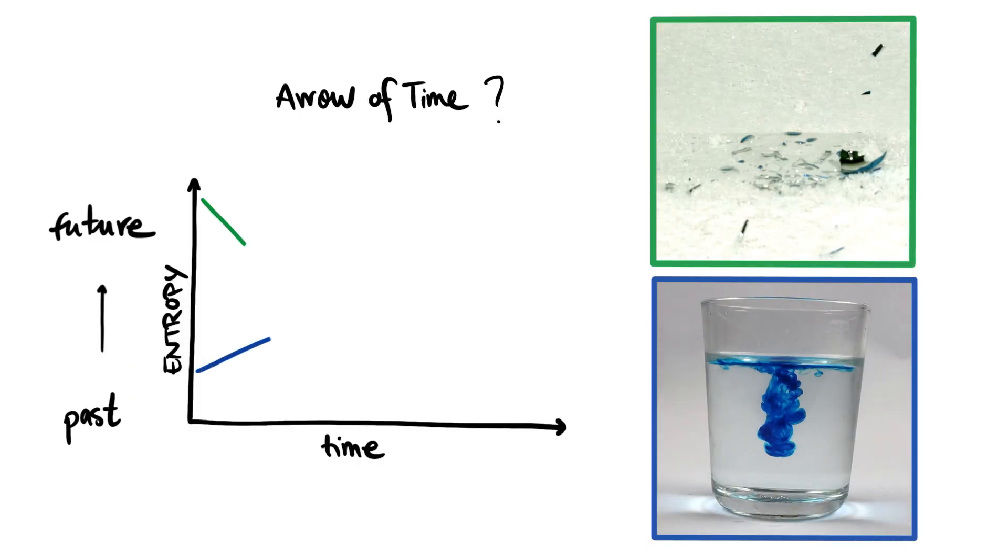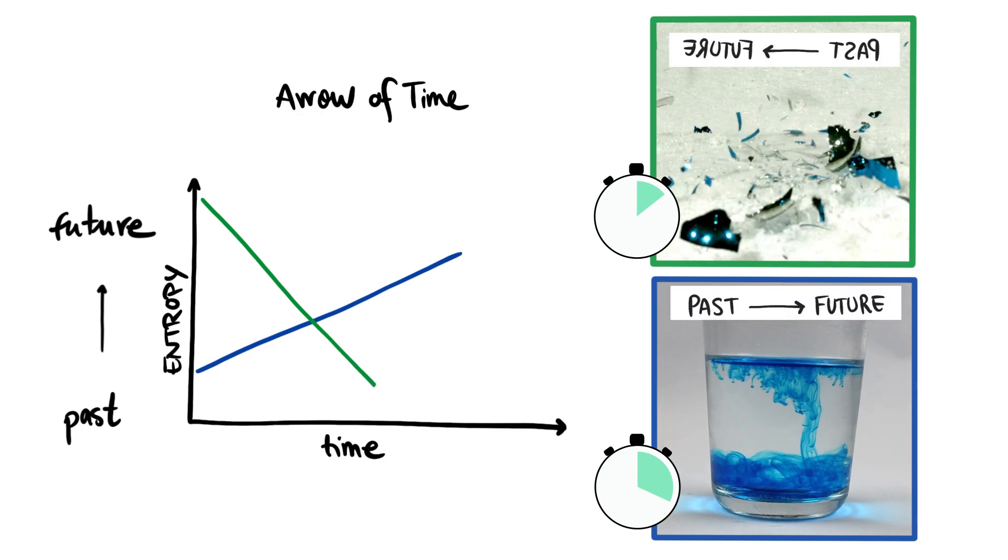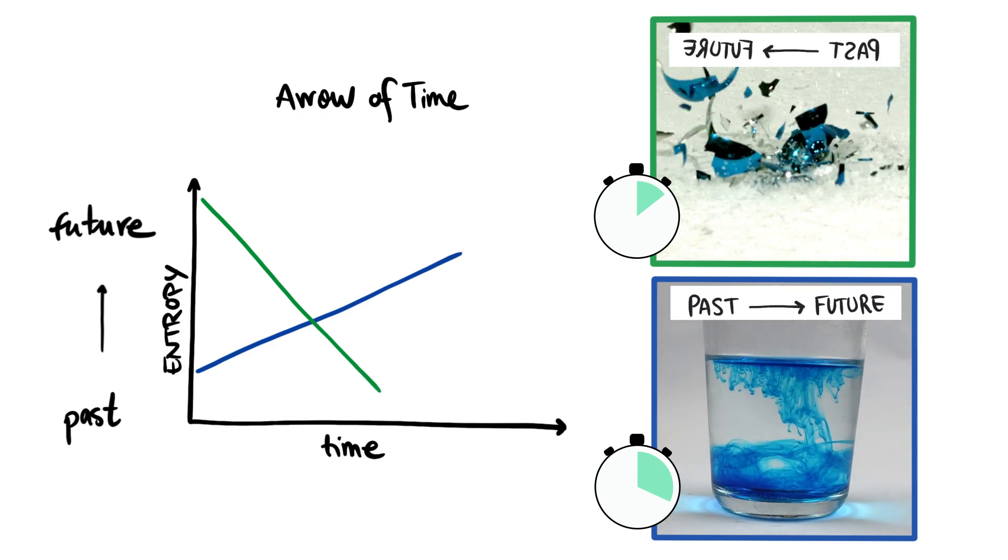To guess if a movie runs forwards or backwards, you need to watch the movie until you are sure whether the entropy of the system is increasing or decreasing, respectively.